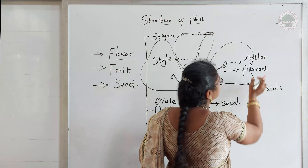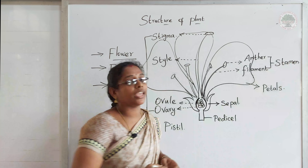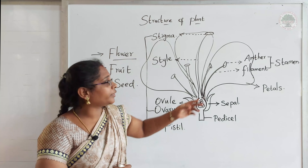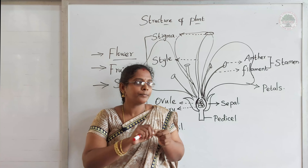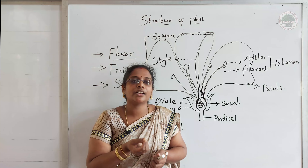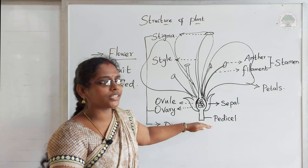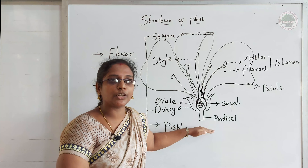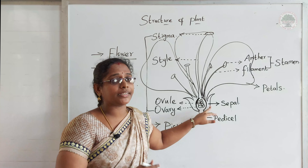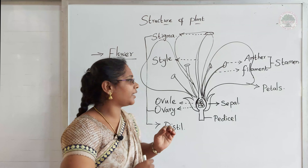Not only the female reproductive organ but also the male reproductive organ is present in the flower. There is a small tube-like structure called the filament, and at the top there is a bulged area which is yellow in color — this is the anther. The anther and filament together are called the stamen. The stamen is the main male reproductive part. If you tear the anther you could see a yellow powdery substance — that is the male cell, and we call it pollen grains.